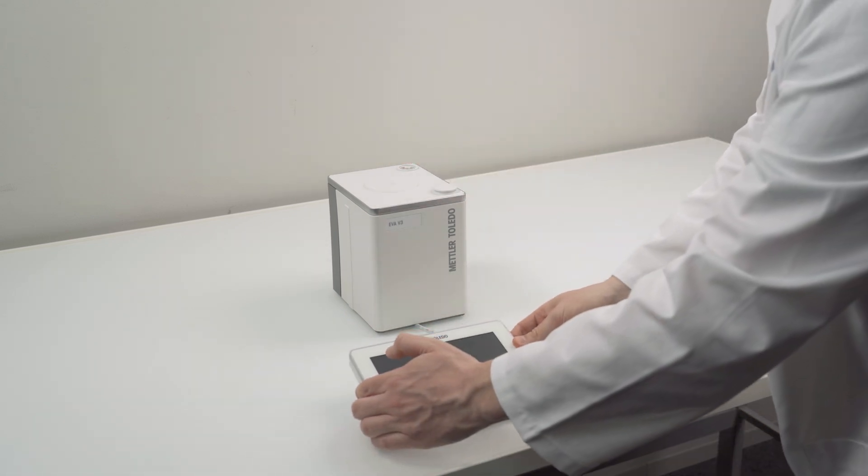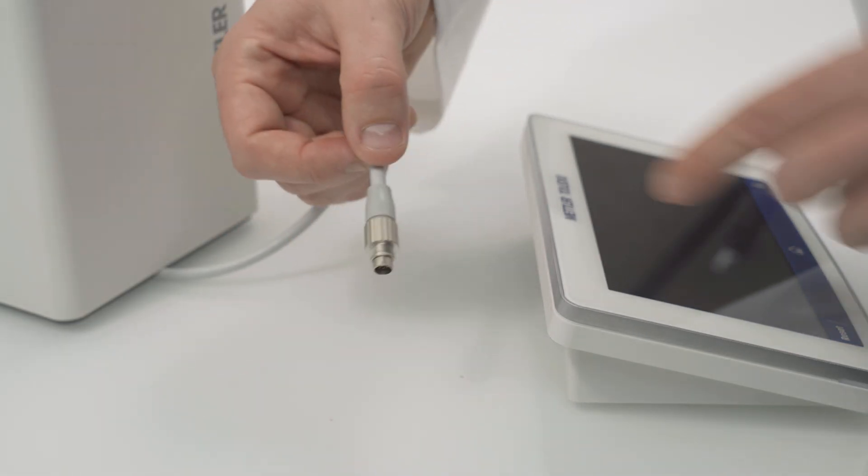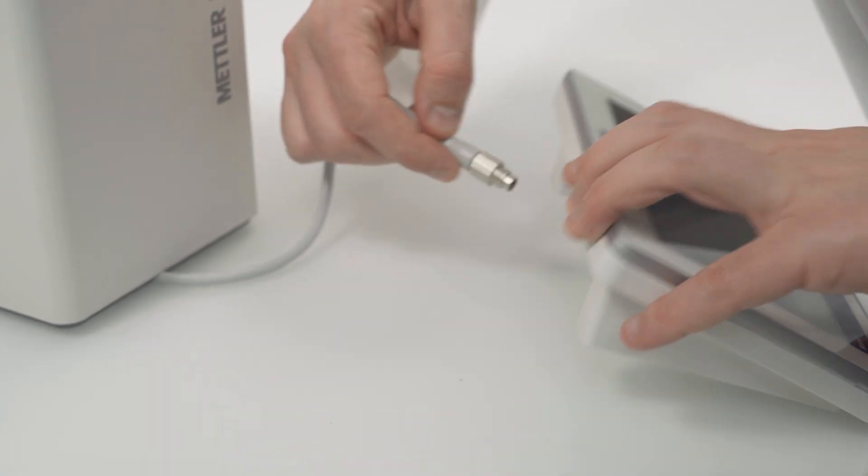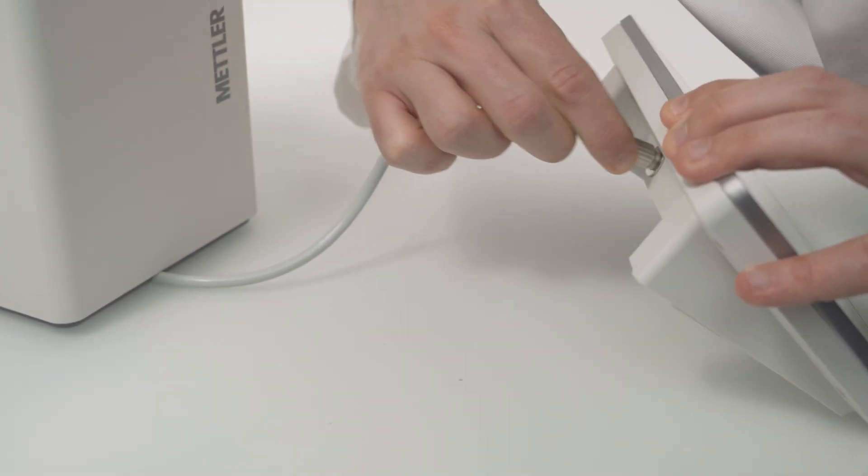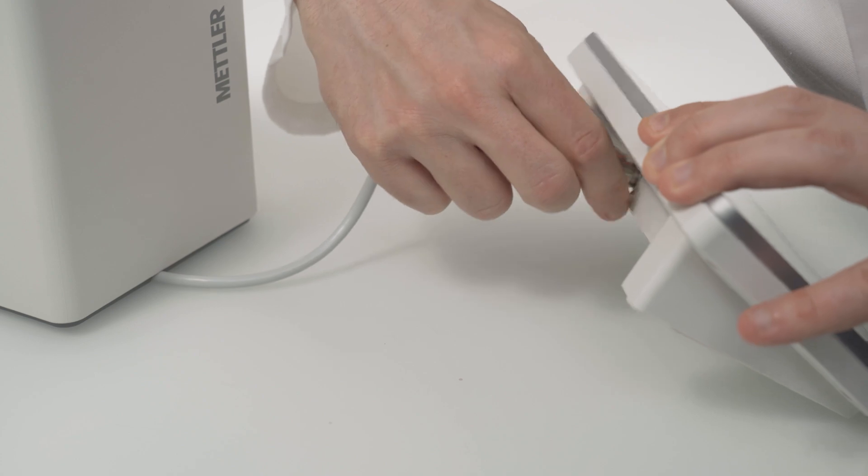Position the terminal in front of the titrator. On the cable you will find a small arrow. This arrow must look upwards to be aligned with the terminal socket. Push it in and fasten it down.